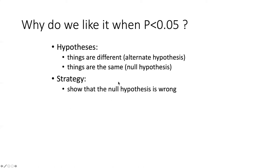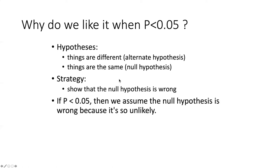And there's a very fundamental sort of reason why we do it this way. If p is less than 0.05, then we can assume that the null hypothesis is wrong because it's really, really unlikely that this kind of an outcome could happen strictly due to chance.